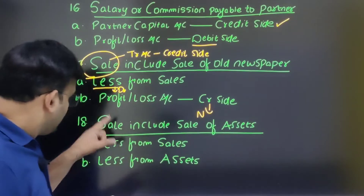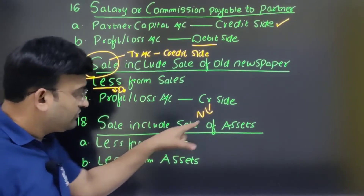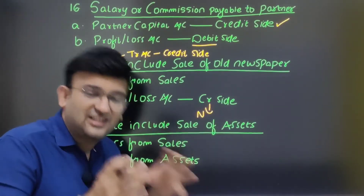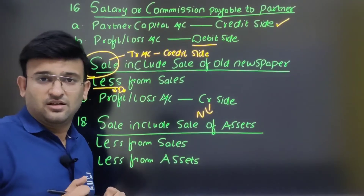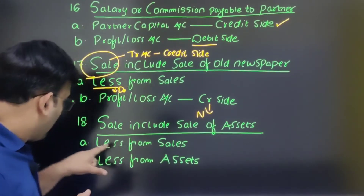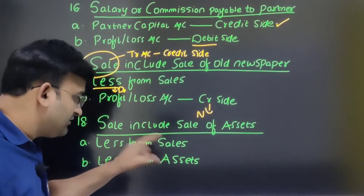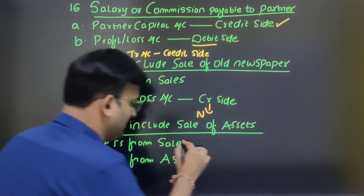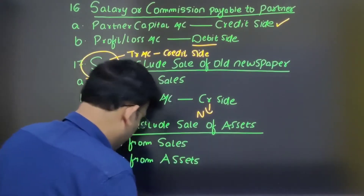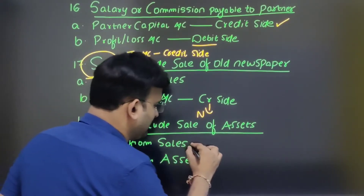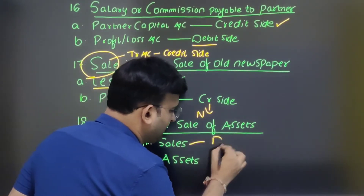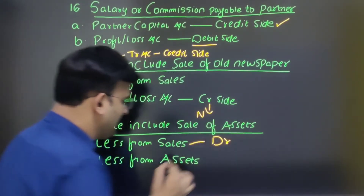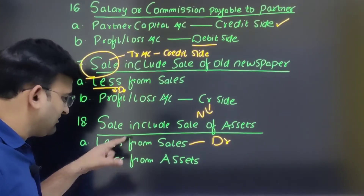The accountant has added the sale of assets into sales. So what we need to do is less from sales. Sales has a credit balance, so to reduce it we debit it.